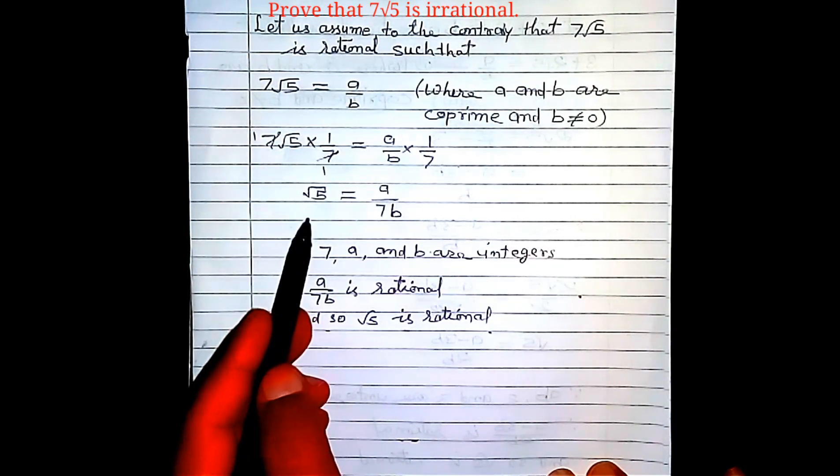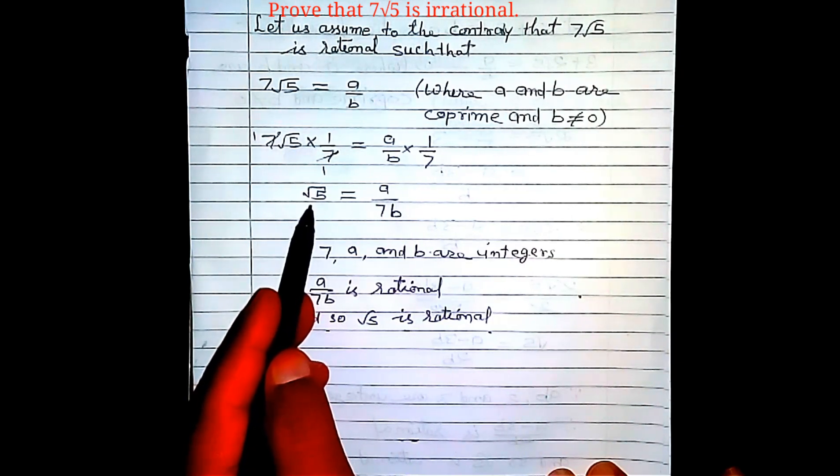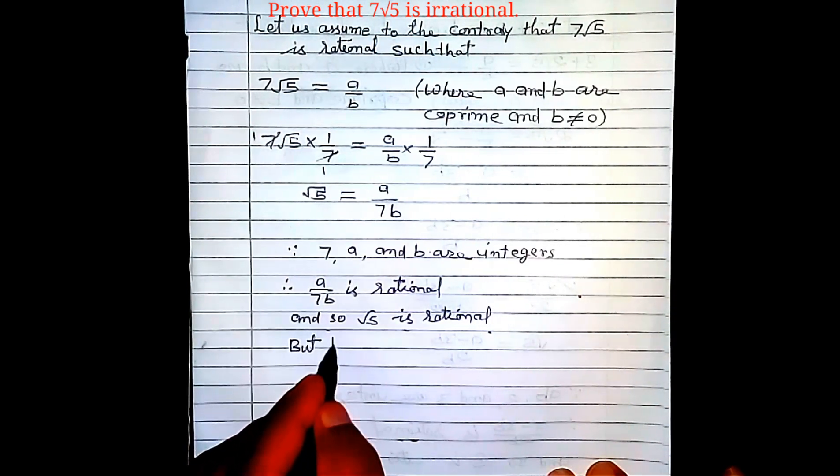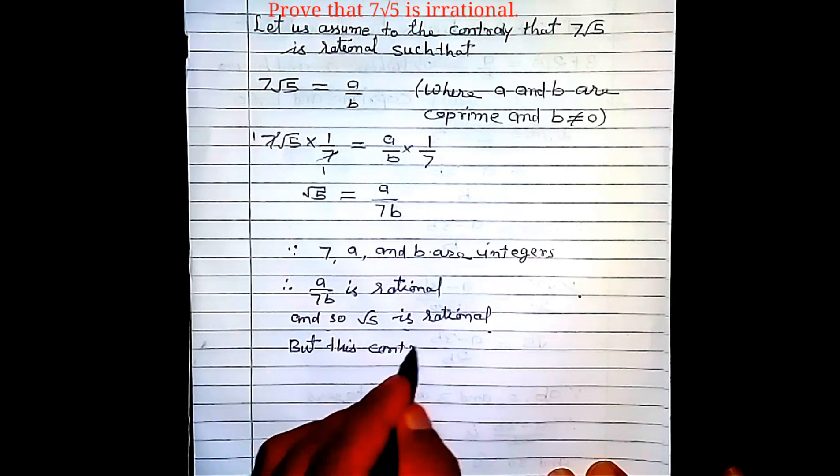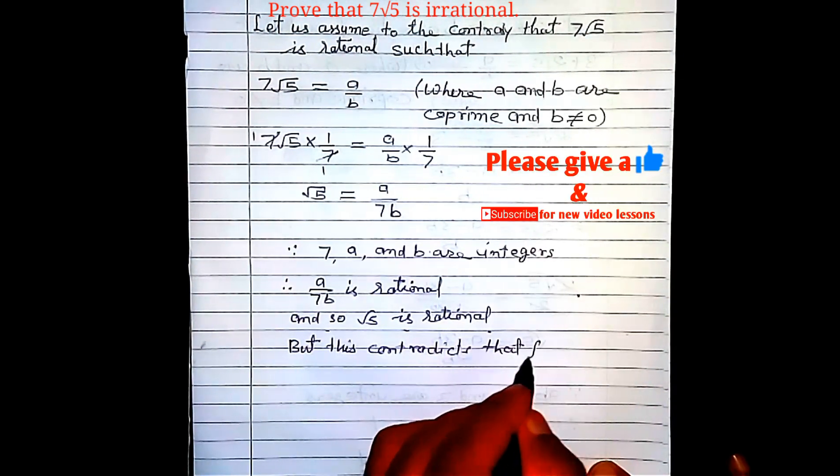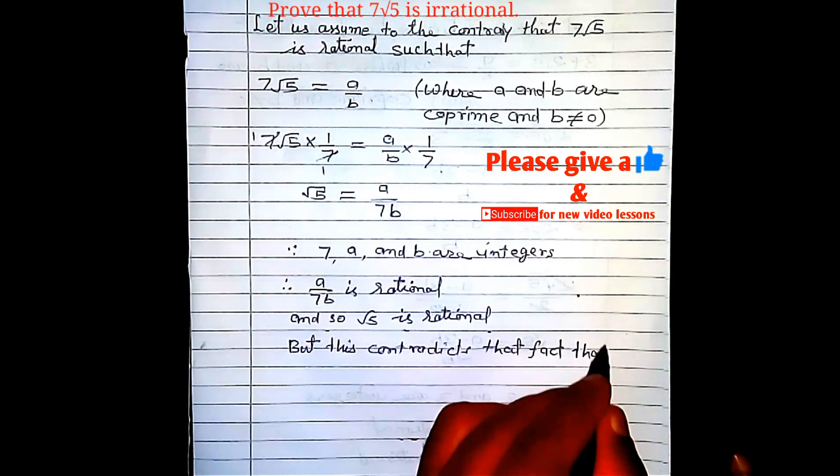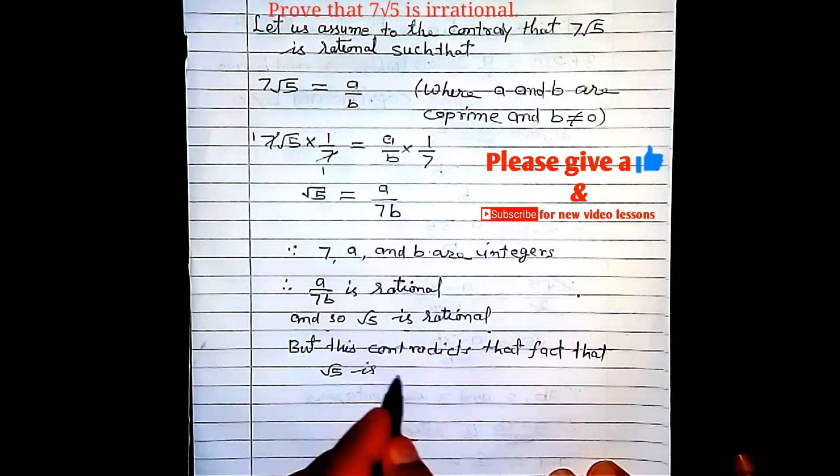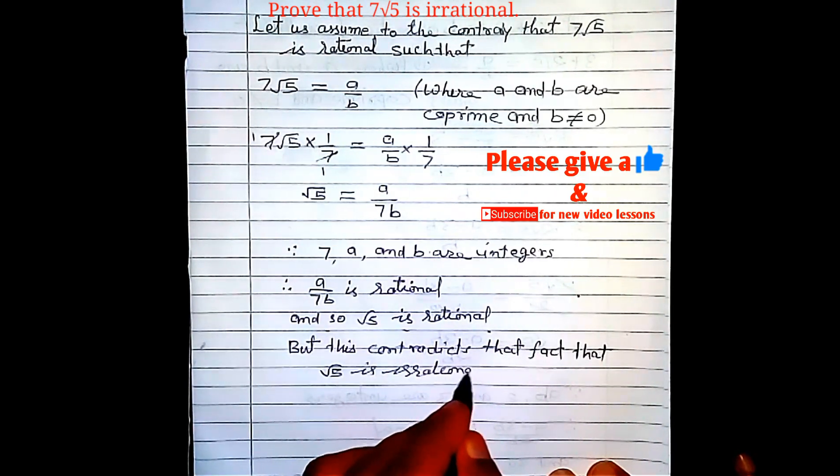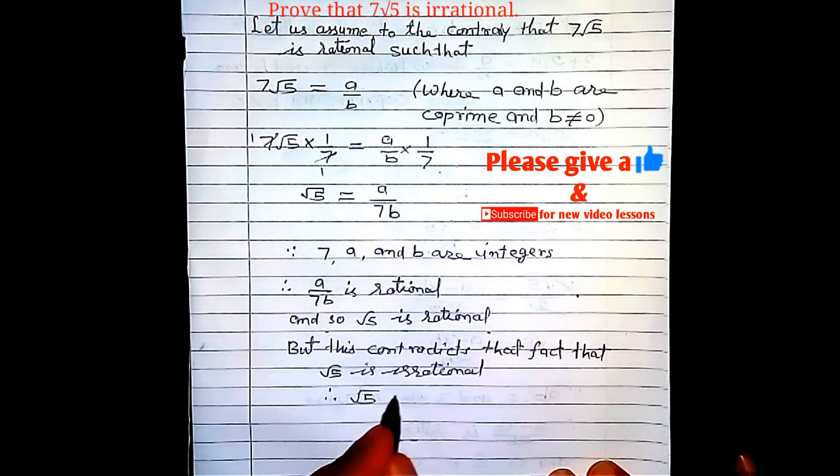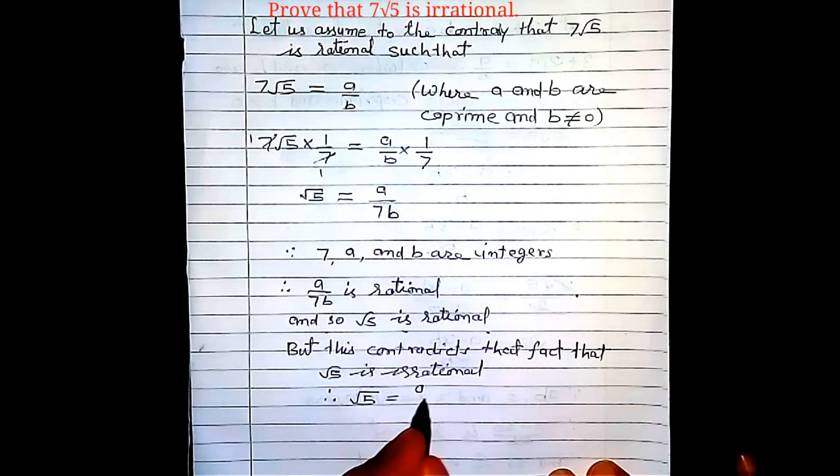But we know that √5 is not rational; it is irrational. So this contradicts the fact that √5 is irrational. Therefore, √5 can never be equal to a rational number, that is a/7b.